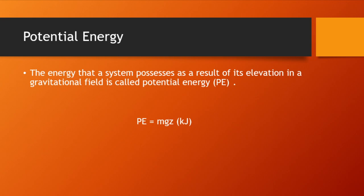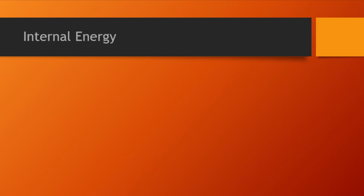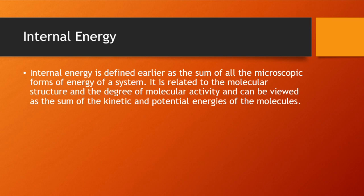Kinetic energy and potential energy are forms of macroscopic energy — those a system possesses as a whole with respect to some outside reference frame. The microscopic forms of energy are those related to the molecular structure of a system and the degree of molecular activity. They are independent of any outside reference frame, such as internal energy. Internal energy is defined as the sum of all microscopic forms of energy of a system.